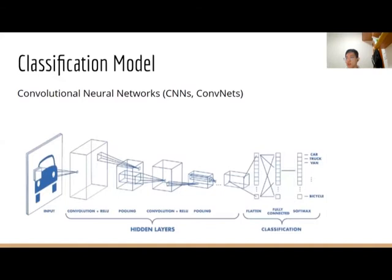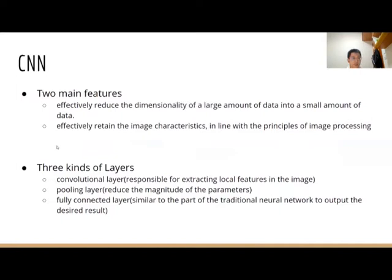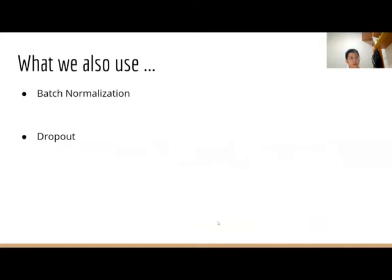Now talking about the model description and experiments. In this project, we are solving an image classification problem. So we decided to construct a CNN model to finish our prediction of whether the patient has pneumonia or not by looking at the X-ray image. Here are two main features of CNN. CNN consists of three kinds of layers: convolution layers, pooling layers, and fully connected layers, and here are their functions.